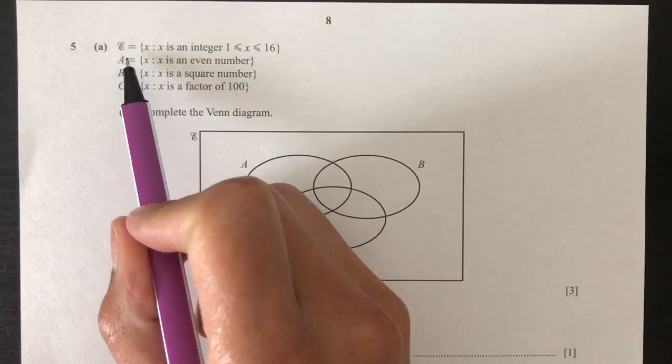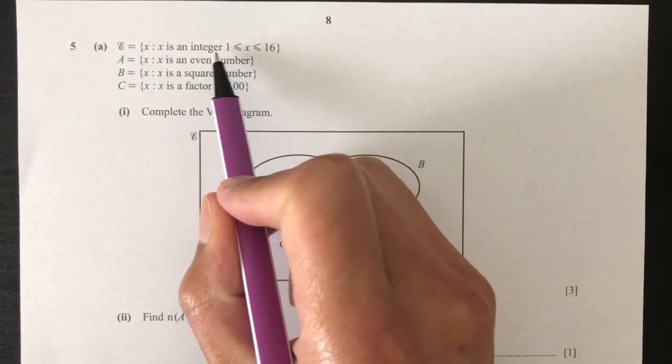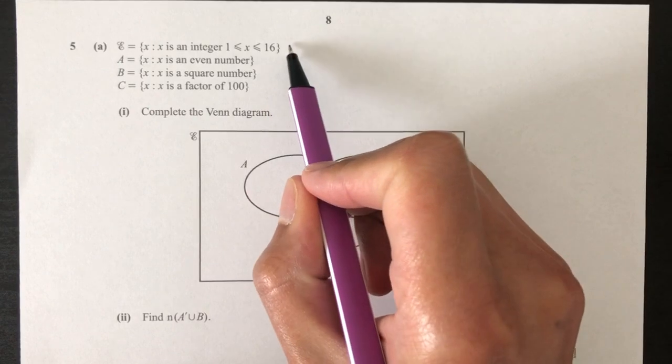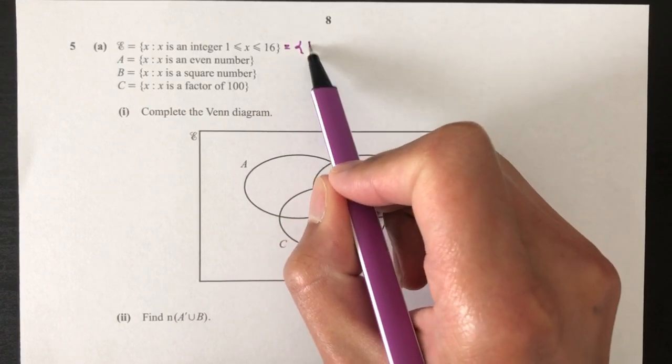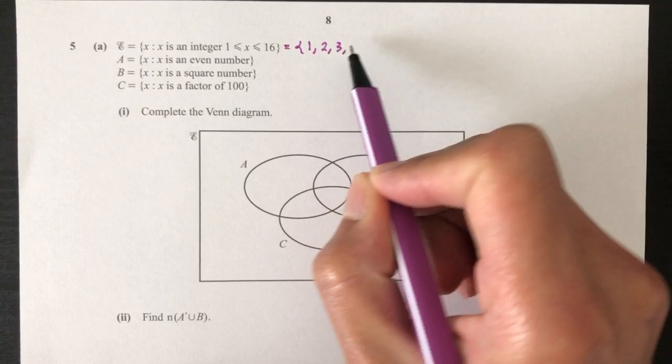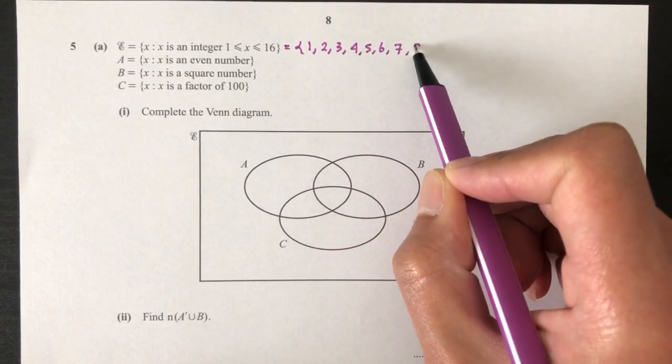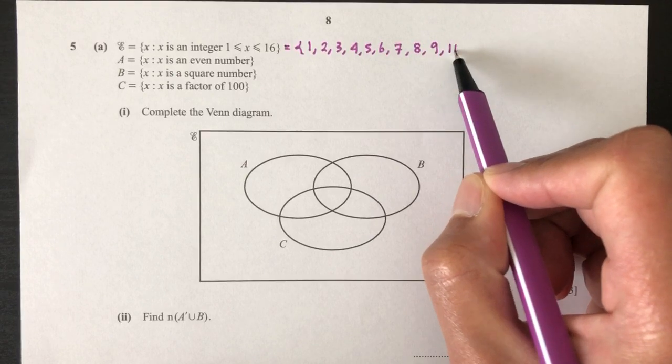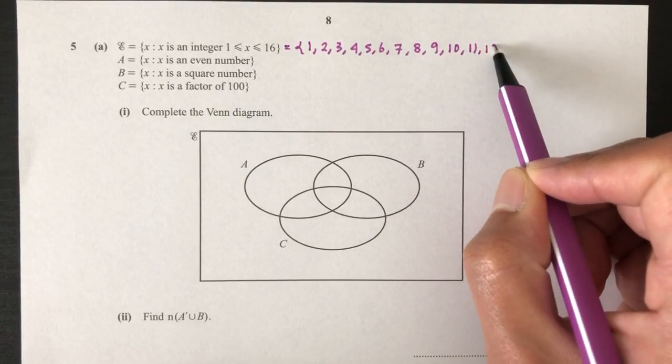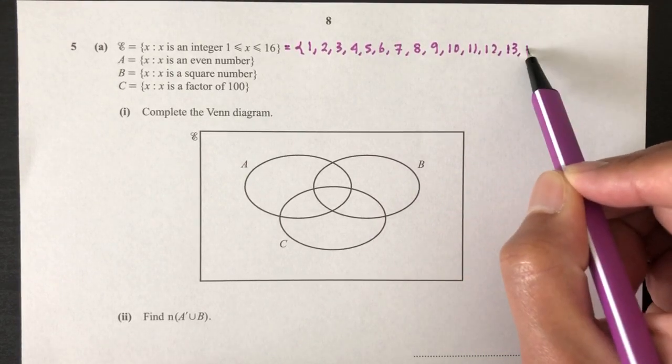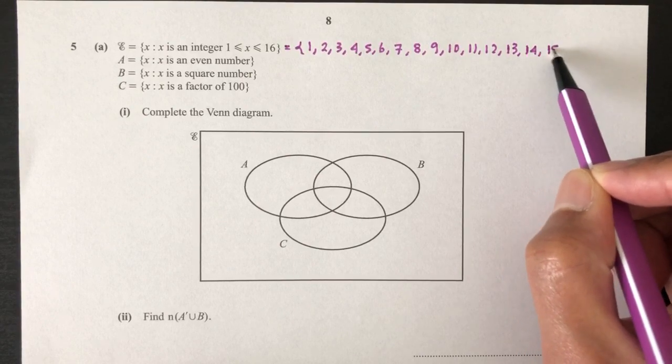First, we have this set of integers from 1 to 16. So what we need to do is to first list all the elements in this set. So 1, 2, 3, 4, 5, 6, 7, 8, 9, 10, 11, 12, 13, 14, 15 and 16.